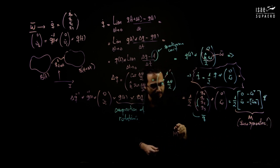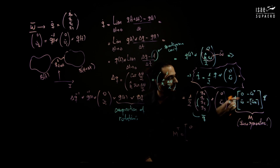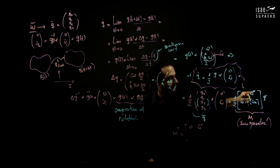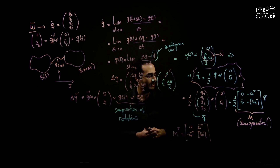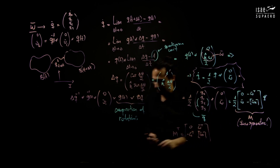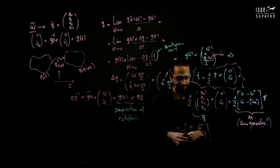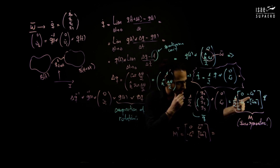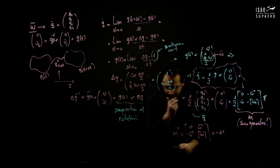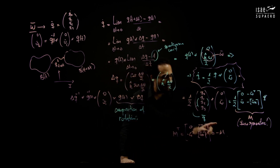Calling this matrix M, notice that M is skew-symmetric. Taking M transpose: the top-left entry stays 0, the top-right becomes omega transpose (from the bottom-left block), the bottom-left becomes minus omega (from the top-right block), and the cross-product block is itself skew-symmetric. The result is that M transpose equals minus M, which is exactly the definition of a skew-symmetric matrix.